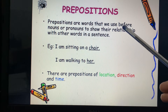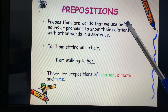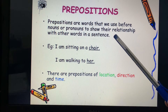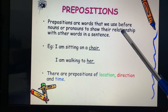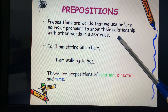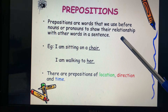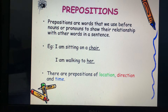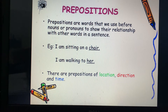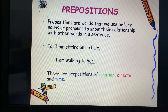Prepositions are the words that we use before nouns or pronouns — nouns or pronouns se pehle use karte hai — to show their relationship with each other in the sentence. So what you have to keep in mind is: prepositions are the words which are used before the nouns or pronouns, and it shows the relationship with each word in the sentence.